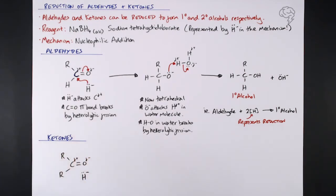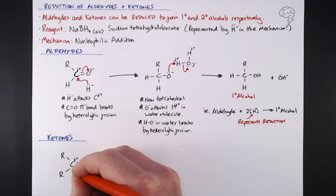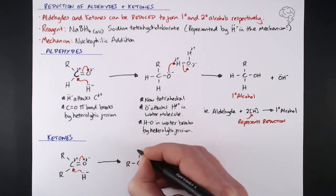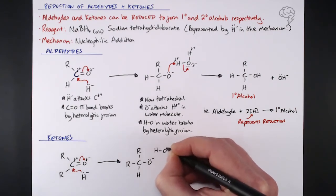The mechanism from that point is exactly the same. If you follow your nose through the mechanism - H minus attacking the delta positive on the C, the pi bond between the C and the O breaking heterolytically...